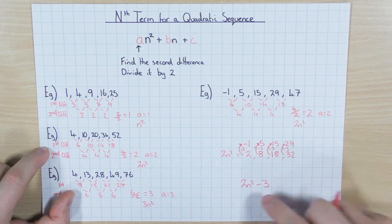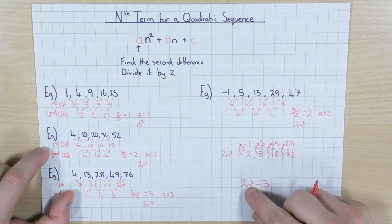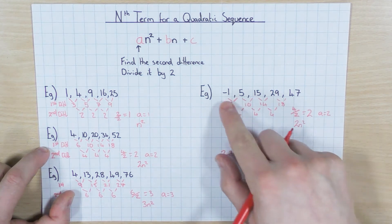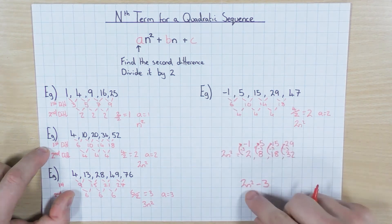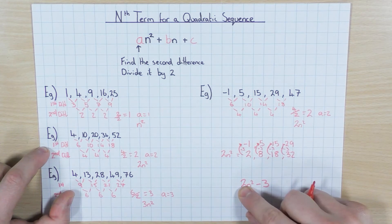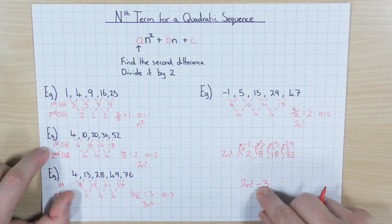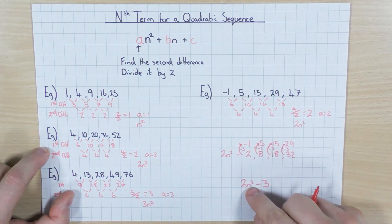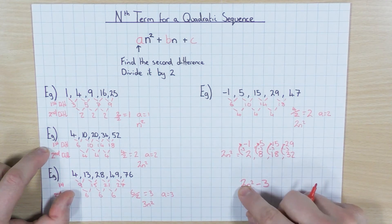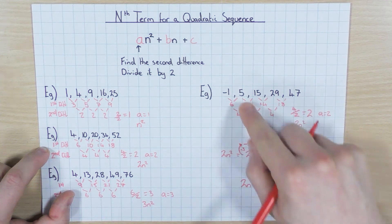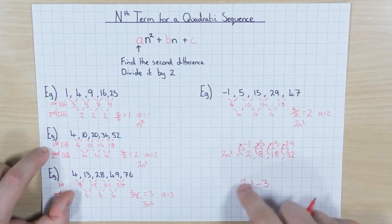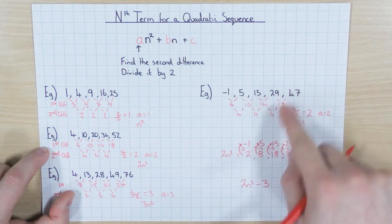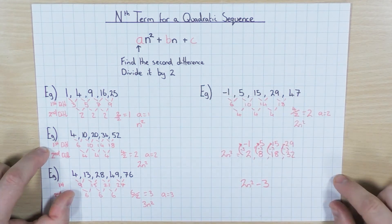This is an example where there's no 'bn' term — it would just be 0n — so we just have 2n squared minus 3. That generates any number in this sequence. You can test it: for the first term, n is 1, so 1 squared is 1, times 2 is 2, take away 3 is minus 1. For the second term, n is 2: 2 squared is 4, times 2 is 8, take away 3 is 5.